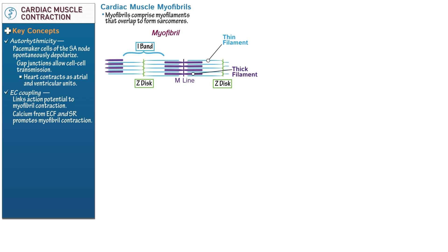Now indicate that the I-band, also referred to as the light band, of the myofibril comprises the area where there's no overlap between the thick and thin filaments — think I for light. The area where thick and thin filaments do overlap creates the A-band, also referred to as the dark band — think A for dark. Finally indicate that the sarcomere spans from Z-disc to Z-disc. The sarcomere is the functional contractile unit of the myofibrils.